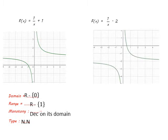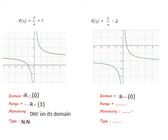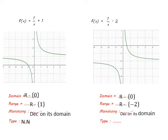For f(x) = 1/x - 2, the point of symmetry equals (0, -2). The domain is ℝ except 0 and the range is ℝ except -2. The function decreases on its domain, or decreases on ℝ except 0. The function is neither even nor odd.